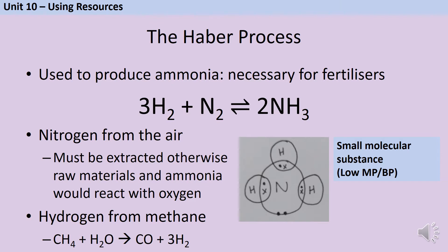Ammonia is made out of hydrogen and nitrogen reacting in a three to one ratio, as you can see in the equation here. The slightly unusual arrow in the middle shows you that this is a reversible reaction.